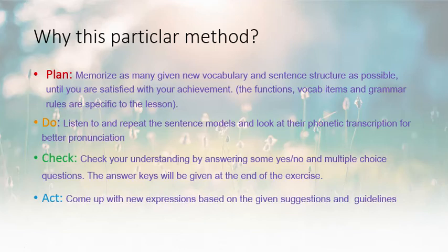Why this particular method? Step number one: you are going to memorize as many given vocabulary items in sentences or sentence structures as possible until you are satisfied with your achievement. The functions, vocab items, and grammar rules are specific to the lesson. Step number two, Do: you are going to listen and repeat the sentence models and look at their phonetic transcription for better pronunciation. Step number three: you are going to check your understanding by answering yes/no, multiple choice, and true-false questions. The answer keys will be given at the end of each exercise.